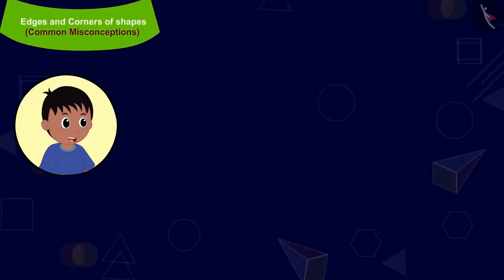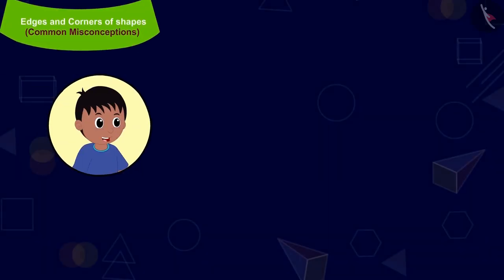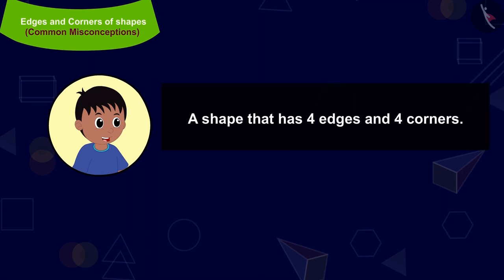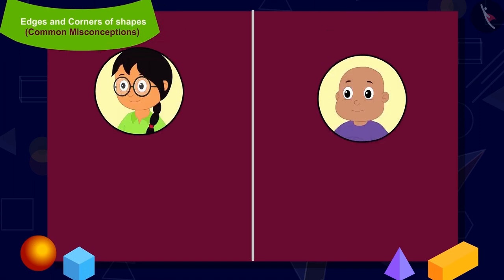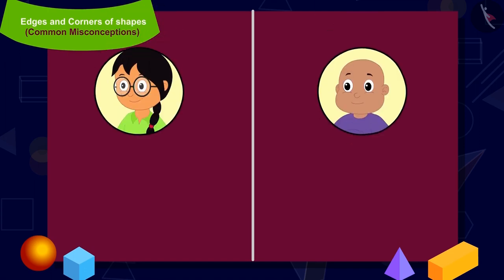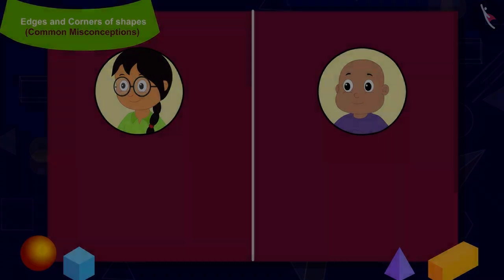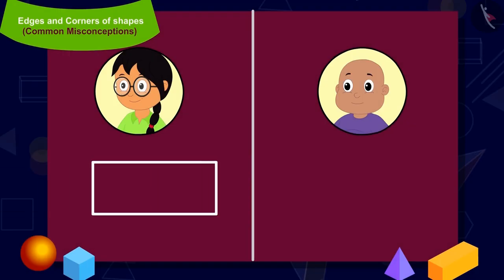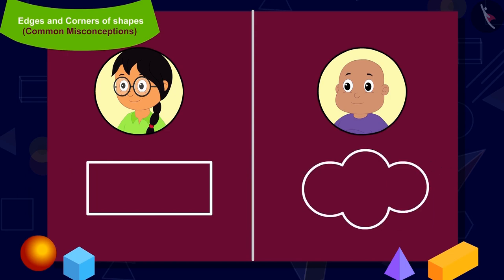Raju's first question is: make a shape which has four edges and four corners. Minu and Bablu both start making their shapes. Minu made this shape and Bablu has made this shape. Children, can you say, out of the two, whose shape is correct?